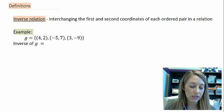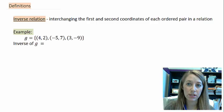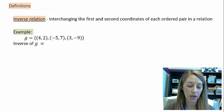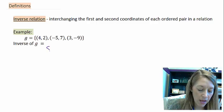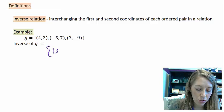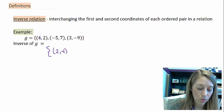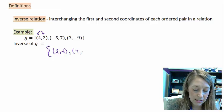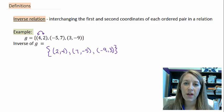In this example, we have g equal to three different ordered pairs. To find the inverse of g, all we need to do is interchange the x and the y coordinates. So in my first ordered pair, 2 becomes the x and 4 becomes the y — we're just interchanging them. It's that easy. My next point is 7, negative 5, and then my last point is negative 9, 3. We have just found the inverse of our g function, which was the set of three ordered pairs.